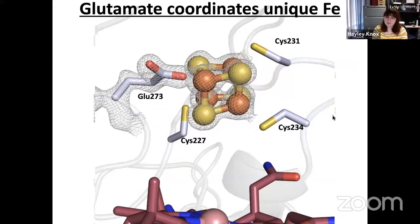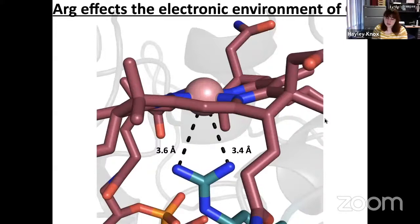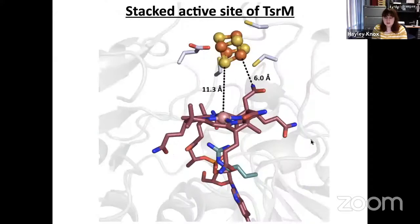The other unique cofactor interaction is with the cobalamin, where we found a completely conserved arginine on the bottom axial face. The guanidino nitrogens of the arginine are too far for a covalent bond at approximately 3.5 angstroms. However, we believe the arginine plays a role in modulating the electronic environment in addition to blocking water access. Methyl-cob(III)alamin is more stable as hexacoordinate, but the presence of the arginine prevents a sixth ligand from binding, thus destabilizing the methyl-cob(III)alamin state by keeping it five-coordinate. The positive charge of the arginine can also act to decrease the energy of the cob(I)alamin state, so we hypothesize that the arginine works to control the electronic environment, thus affecting reactivity.